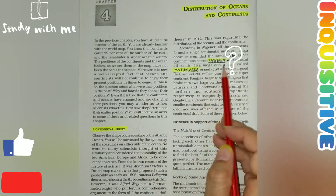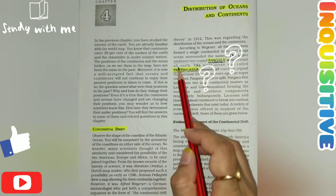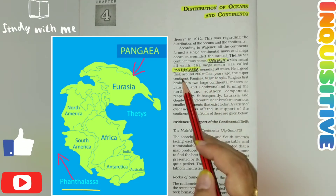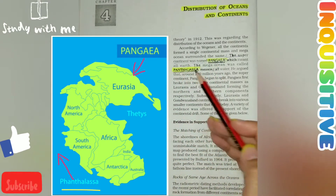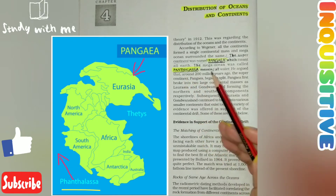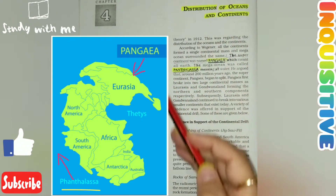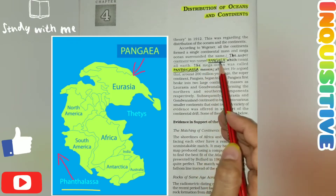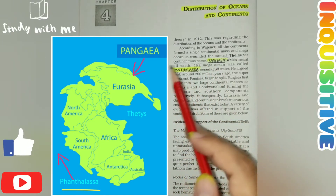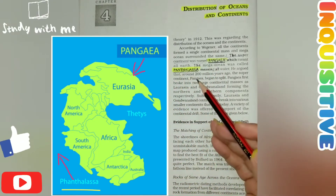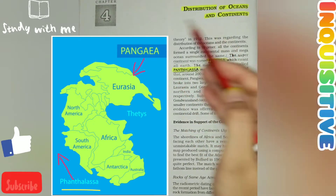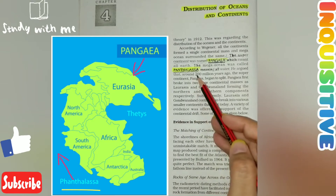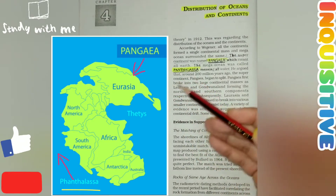What is Pangaea and what is Panthalassa? Pangaea, also known as the supercontinent, is when all the present seven major continents were in a single continent mass. Panthalassa is the mega ocean that surrounded Pangaea, and Panthalassa means 'all water.'